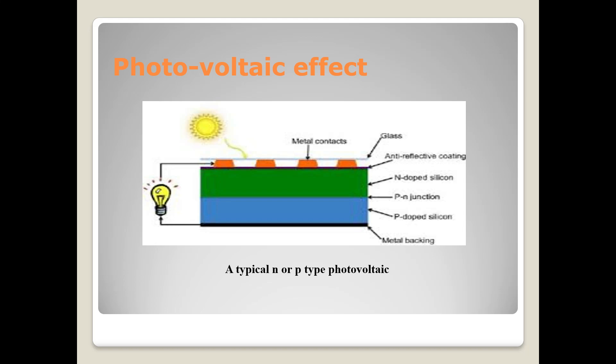We are going to see the description of a typical n or p type photovoltaic effect. The photovoltaic effect can be observed in nature in a variety of materials, but the materials that show the best performance in sunlight are the semiconductors. The semiconductor, as we know already, has two types: n-type and p-type.